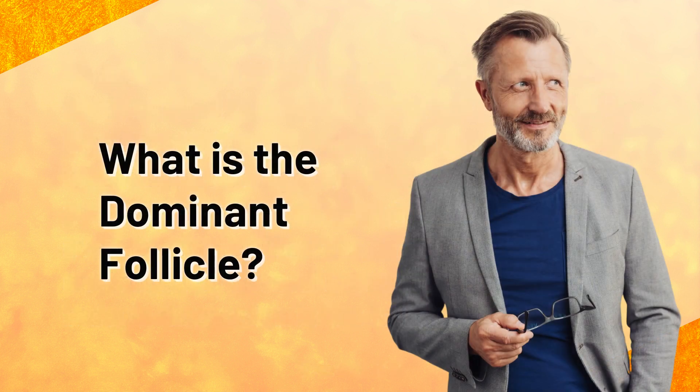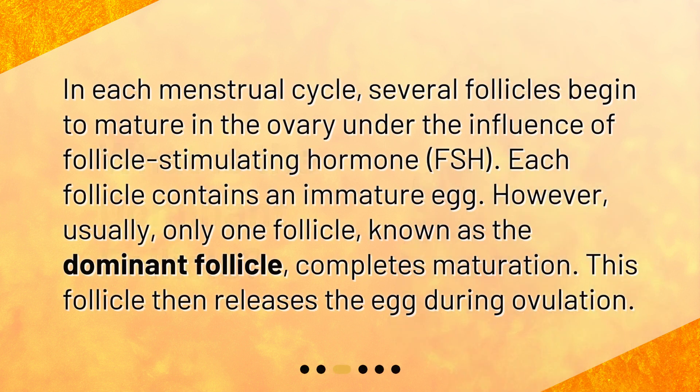What is the dominant follicle? In each menstrual cycle, several follicles begin to mature in the ovary under the influence of follicle-stimulating hormone, FSH. Each follicle contains an immature egg. However, usually only one follicle, known as the dominant follicle, completes maturation. This follicle then releases the egg during ovulation.